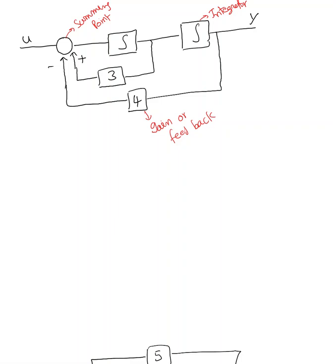Our goal is finding the state equation and output equation. First, we need to know how many integrators there are. Here we have two integrators. An integrator is the opposite of differentiation — if I have x1 dot going into the integrator, I get x1 out. Same here: x2 dot goes in and x2 comes out. So there are two integrators and two state variables. From the diagram, x1 dot is coming from the same line as x2, so x1 dot equals x2.